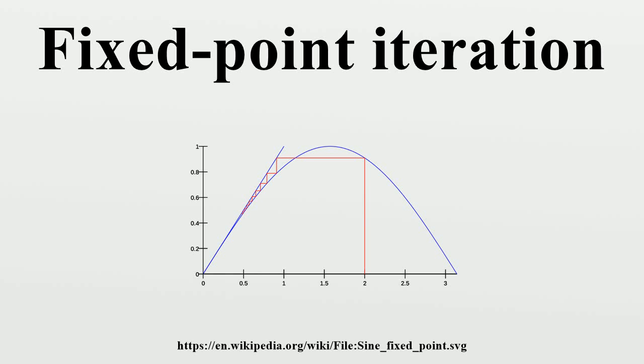More specifically, given a function defined on the real numbers with real values and given a point in the domain of f, the fixed-point iteration gives rise to a sequence which is hoped to converge to a point. If f is continuous, then one can prove that the obtained point is a fixed point of f. More generally, the function can be defined on any metric space with values in that same space.